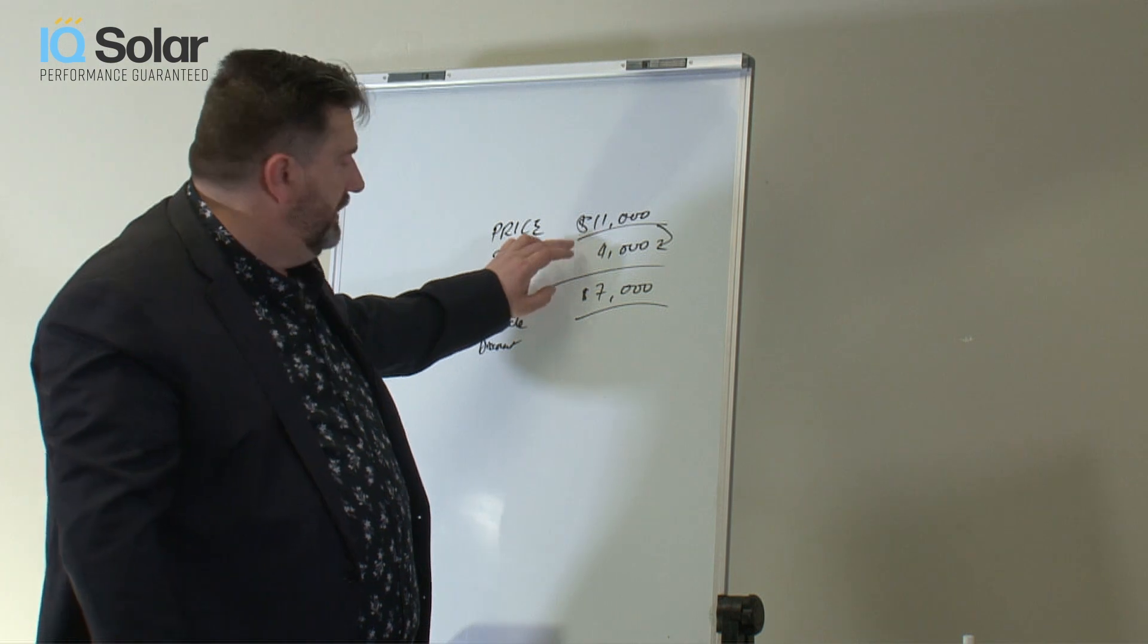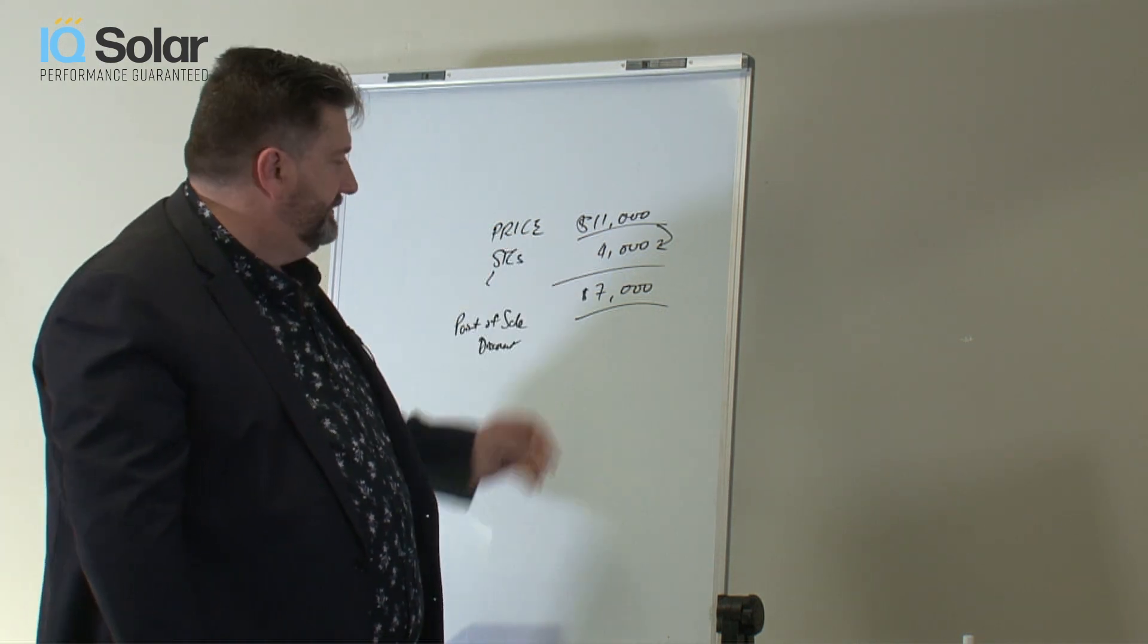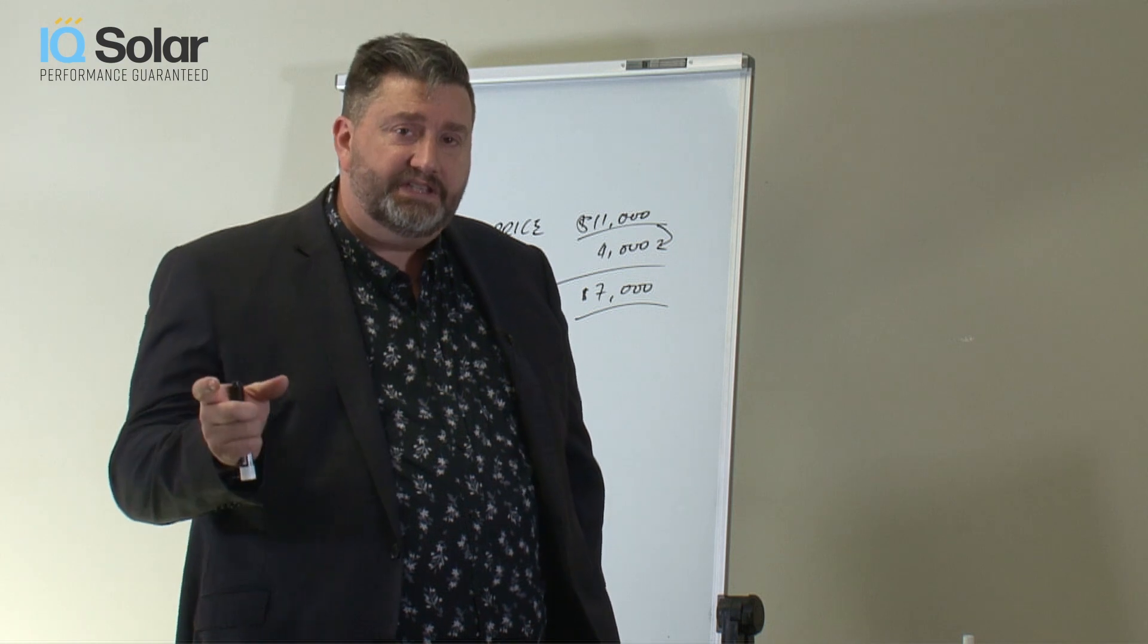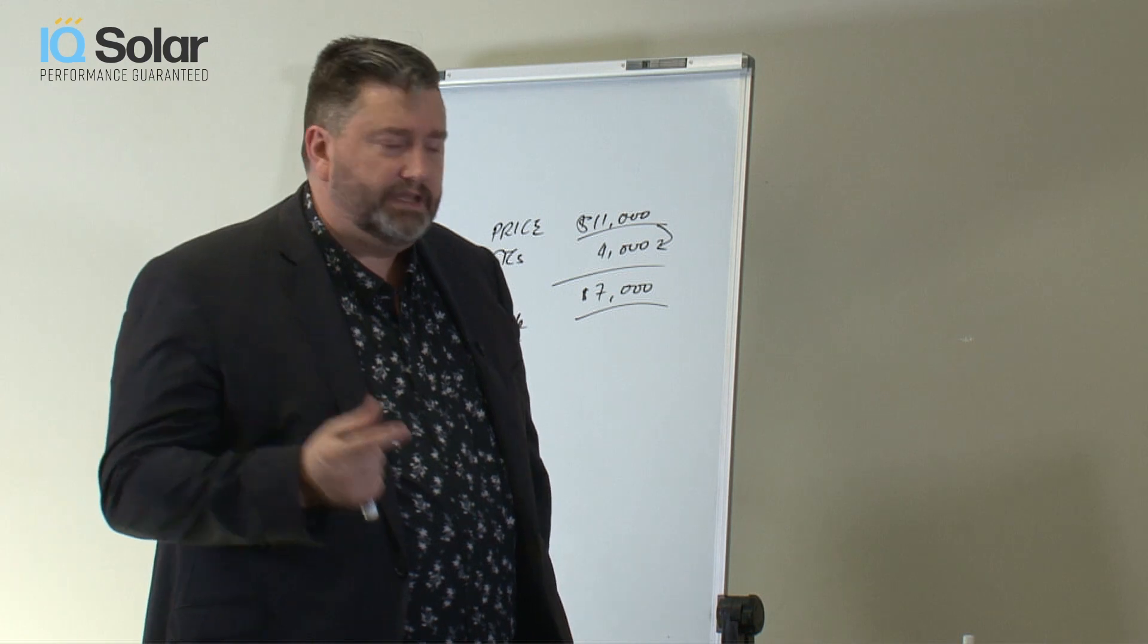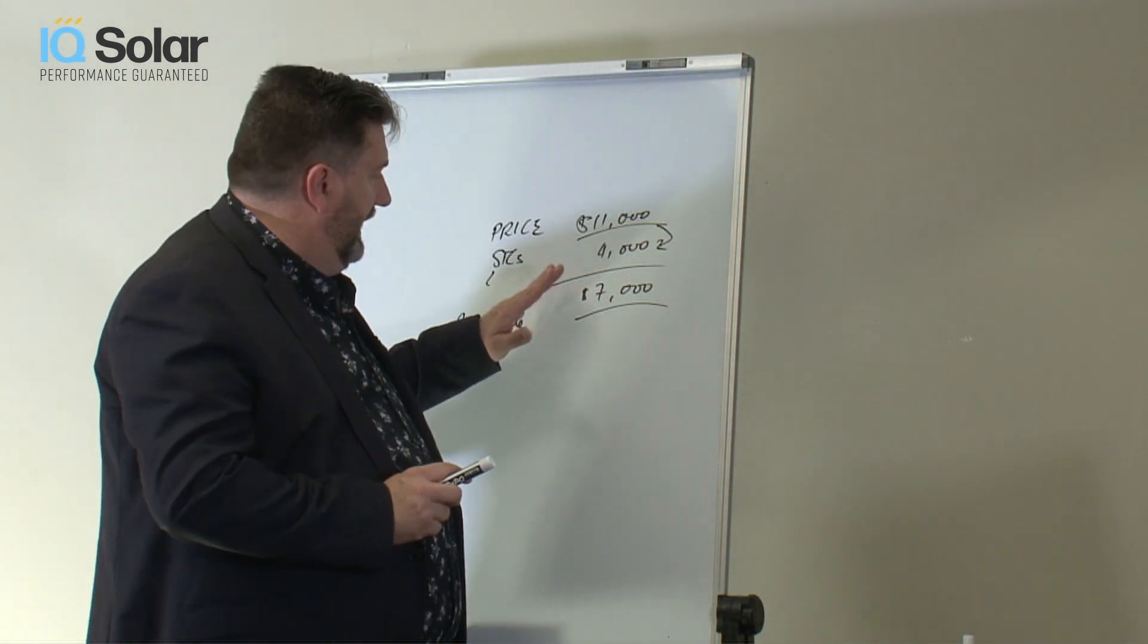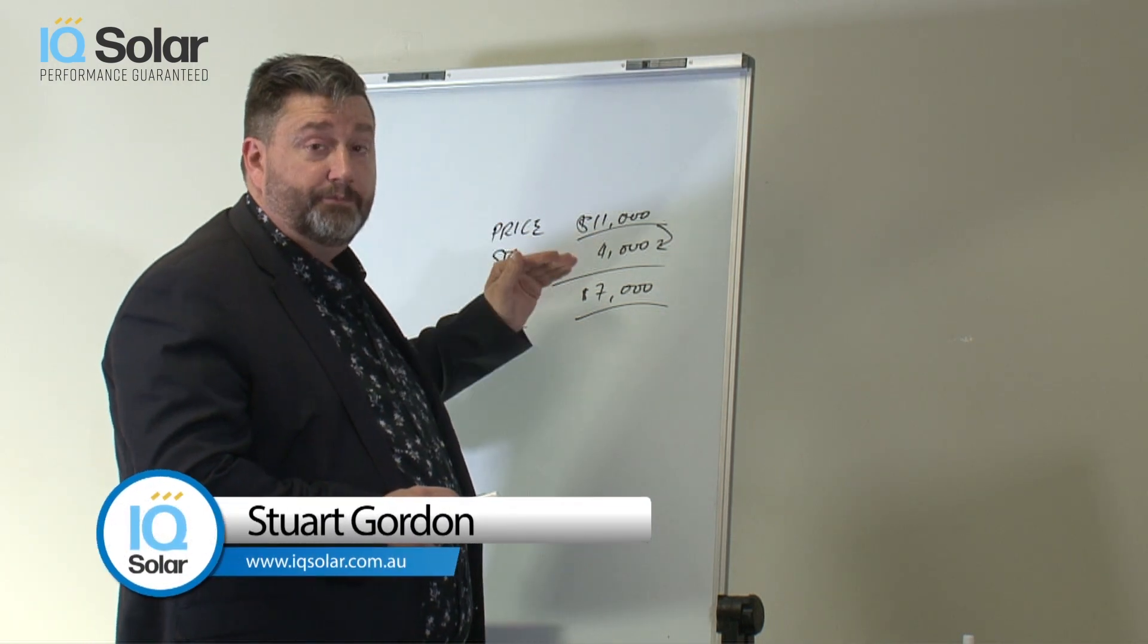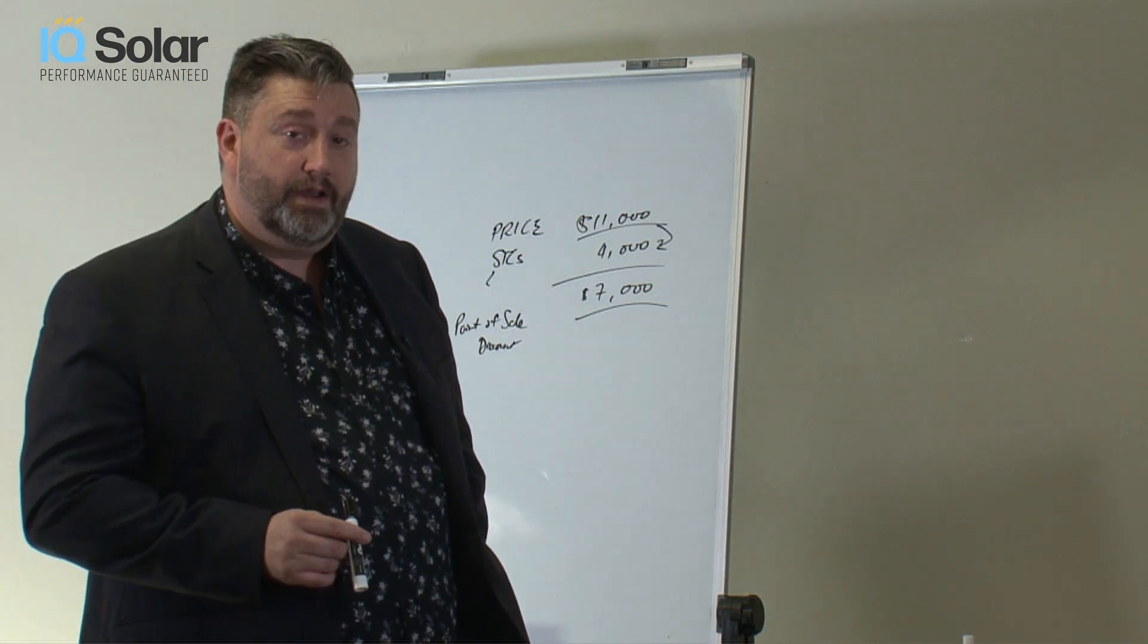They then just take it off the system price, making it very simple. You only pay the out-of-pocket price. This all comes under the renewable energy target. I'll put a link in here if you want to learn some more about it. But basically it should already be part of what you're looking at in terms of a quote. It should be broken down: full price, STC's, and out-of-pocket price. So that is what people refer to as the government rebate.